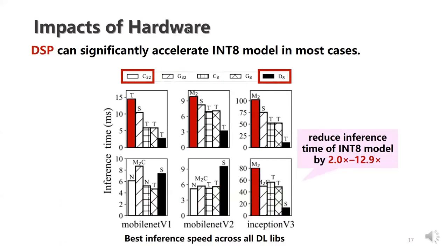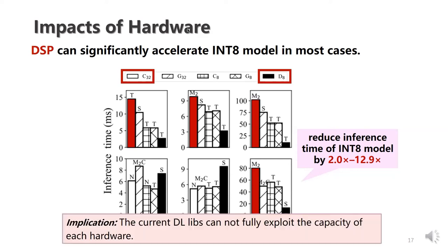We focused on FP32 and DSP INT8. Running on DSP can reduce inference time, mainly because DSP has equipped with AI capabilities. However, DL libraries perform even worse on certain hardware. In other words, the current DL libraries cannot fully exploit the capacity of each hardware. This motivates DL library research to design models suitable for hardware computing and to reduce high memory access operators.